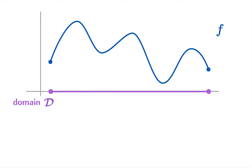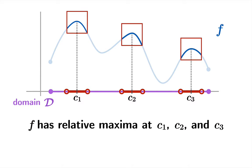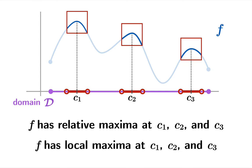Going back to our example, there are actually three relative maxima. There are three spots on the graph where you can build intervals on which the function value at that argument is as big as it's going to get. So f has relative maxima at c1, c2, and c3 — equivalently, f has local maxima at c1, c2, and c3. Local and relative are synonyms.